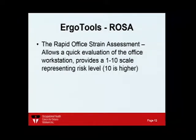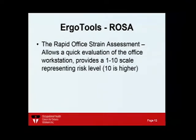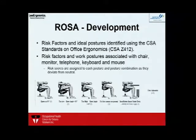ROSA is one of the better ways to manage office ergonomics because it's quantifiable and repeatable — different people doing the assessment can be relatively certain of getting the same answer. It's even been tested for self-assessments. ROSA takes about 10 minutes and gives a 1-to-10 score representing the level of risk. A score of 5 or higher indicates a greater risk of reported discomfort.